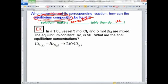We have a one liter vessel, three moles of chlorine, five moles of bromine are mixed. The equilibrium constant is 50. What are the final equilibrium concentrations? In other words, what's the equilibrium composition?